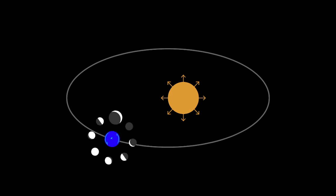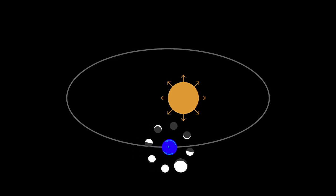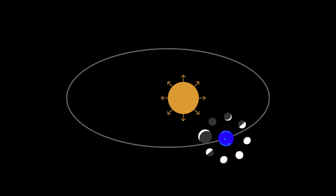The claim that on a heliocentric globe model, the phases of the moon should reverse is false, because in a heliocentric model, the relation between the sun, the earth, and the moon stay the same, and thus the phases should appear the same, unchanged throughout the year, which it does.